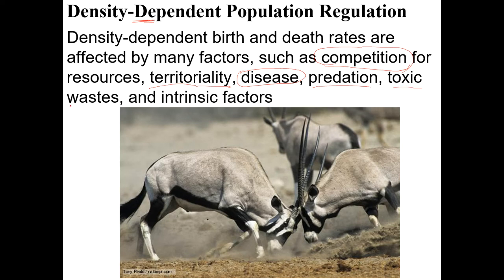Toxic waste is another factor. Picture a petri dish of E. coli — they can only grow for so long before they've depleted their resources and produced so much waste that they're toxifying themselves and killing themselves off.